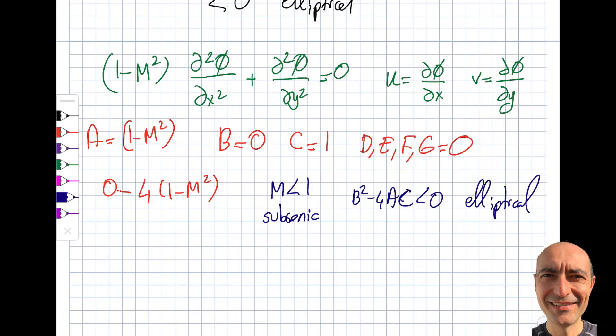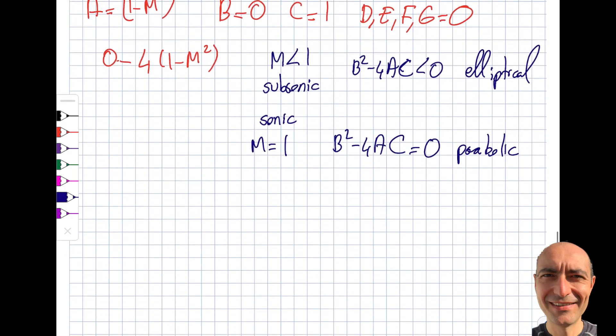As you remember, I call this elliptical, so my PDE in this particular case will be elliptical. I have something called sonic, which means that velocity is equal to speed of sound: M is equal to one. If I look at that case, M is equal to one, what happens here? I got zero. So then my B² minus 4AC is equal to zero. And as you know here, what I said is this is parabolic equation.